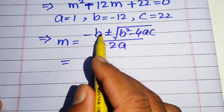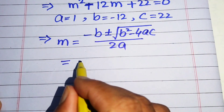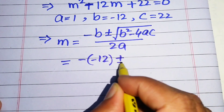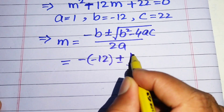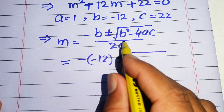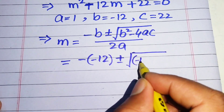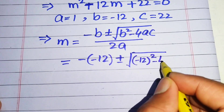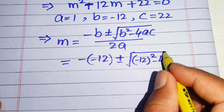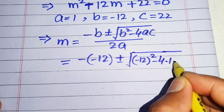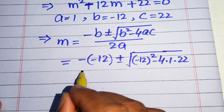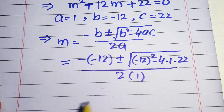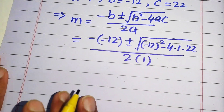The value of b is minus 12, so we have: minus times minus 12, plus or minus the square root of (minus 12)² minus 4 times a times c. Here a is 1 and c is 22, divided by 2 times a, where a equals 1.